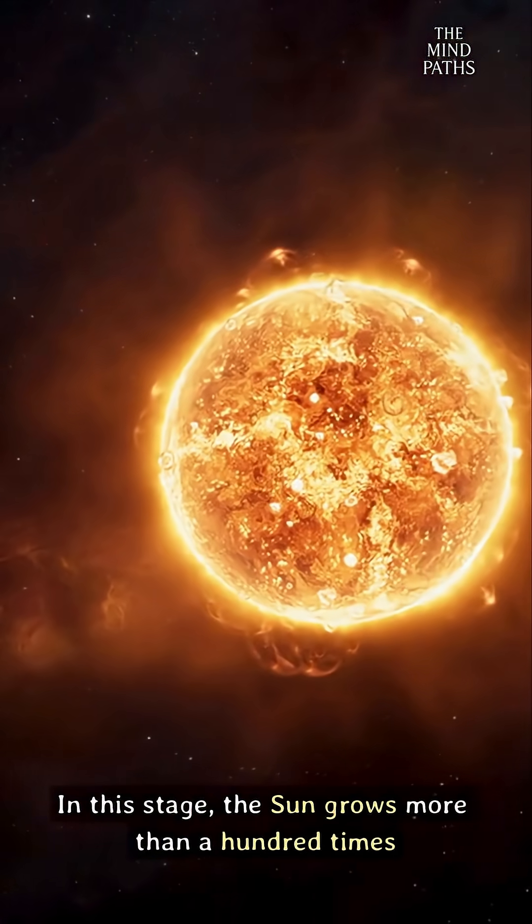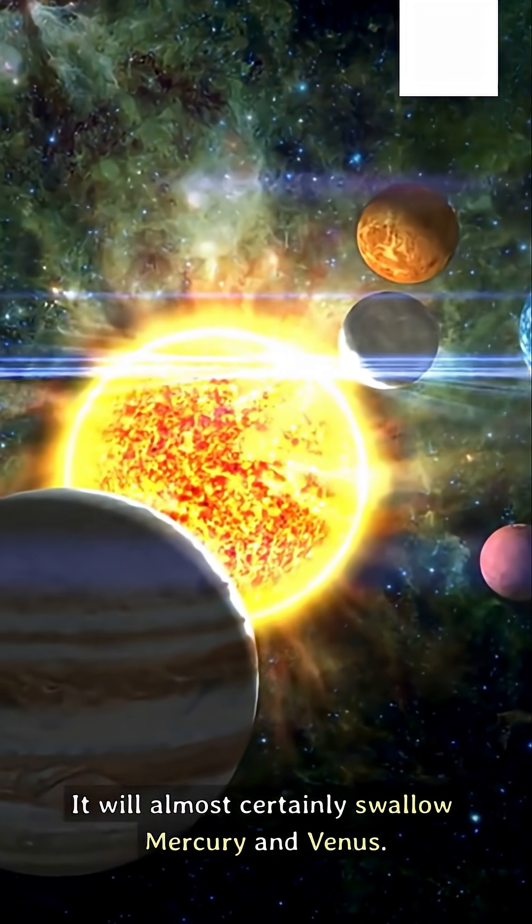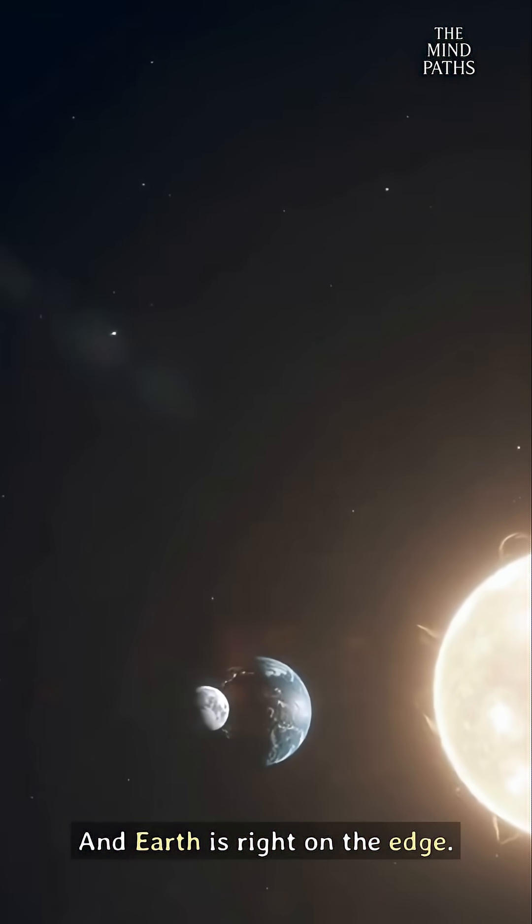In this stage, the sun grows more than 100 times larger than it is today. It will almost certainly swallow Mercury and Venus, and Earth is right on the edge.